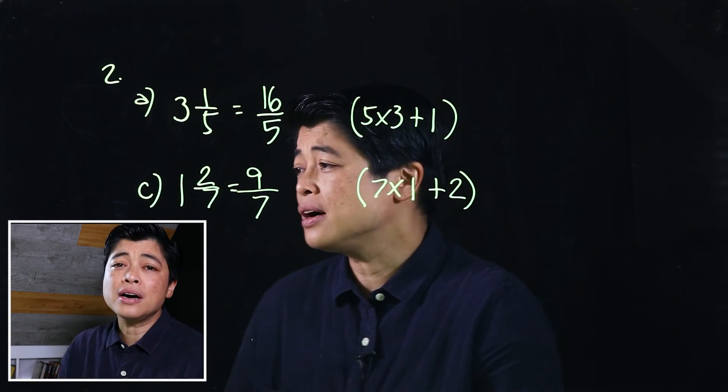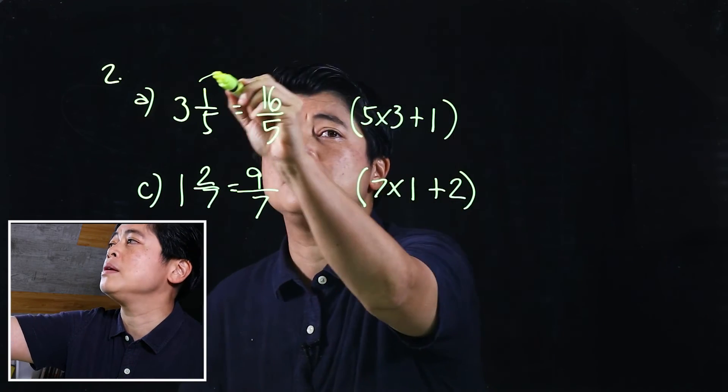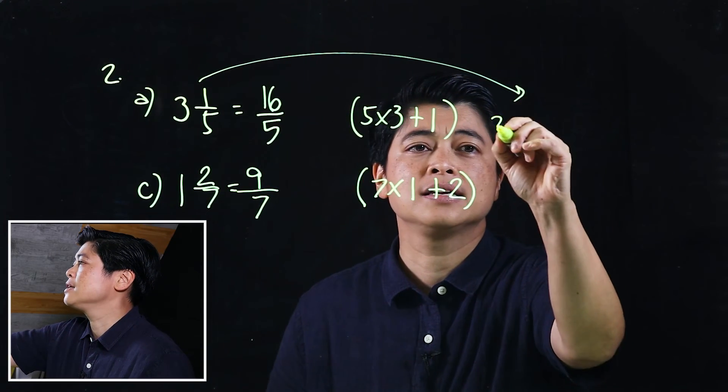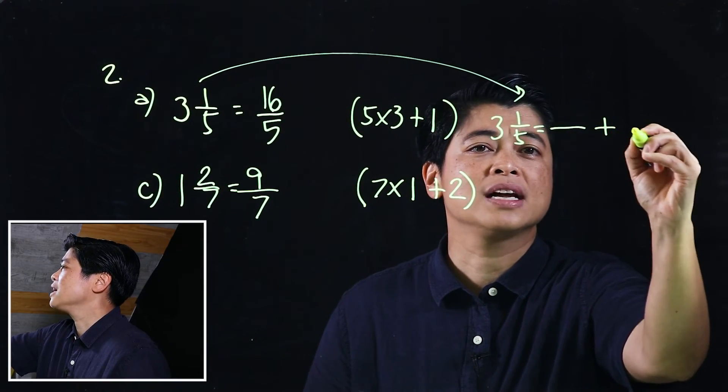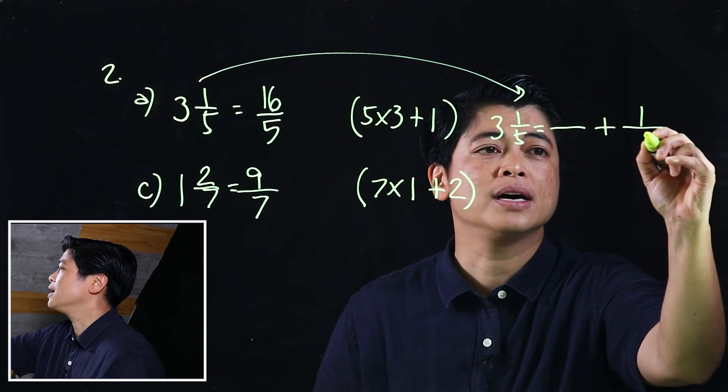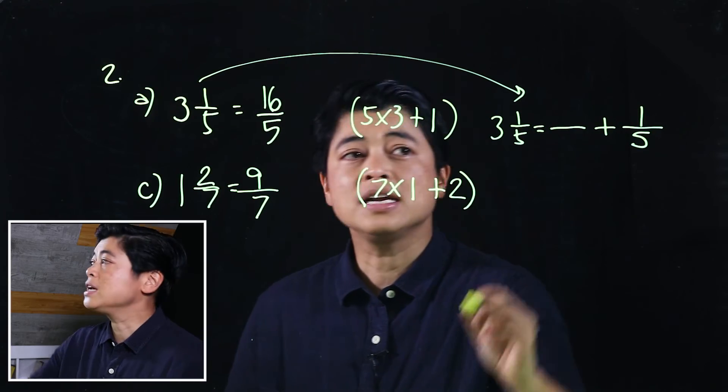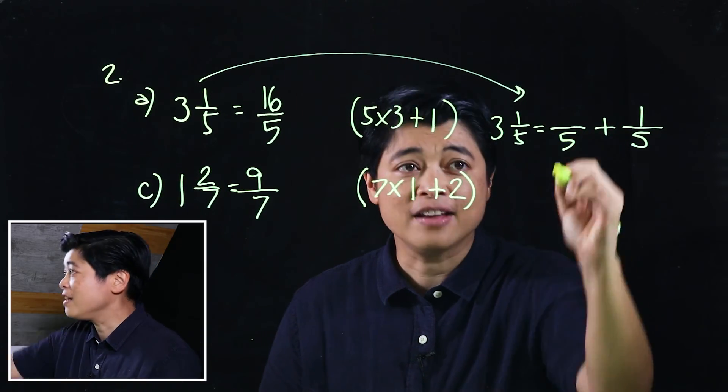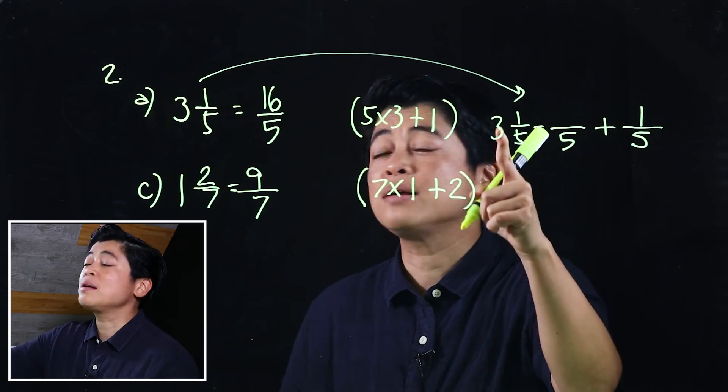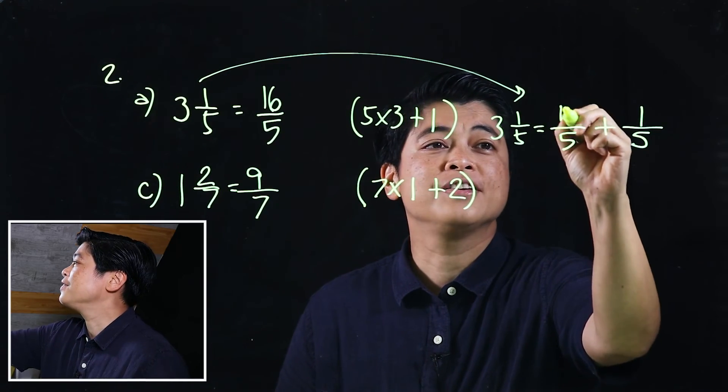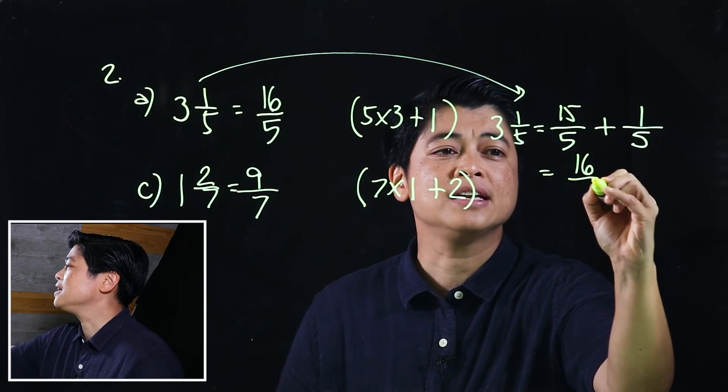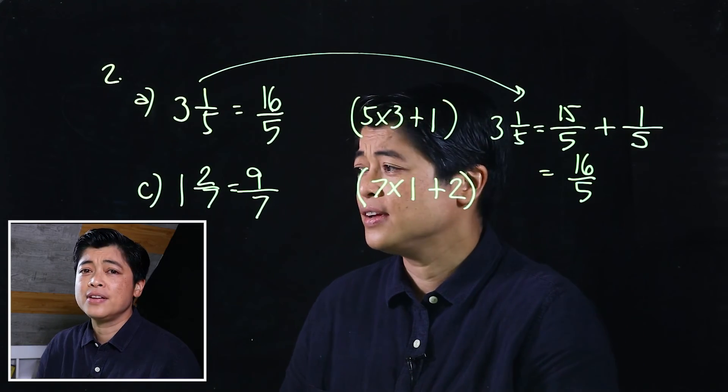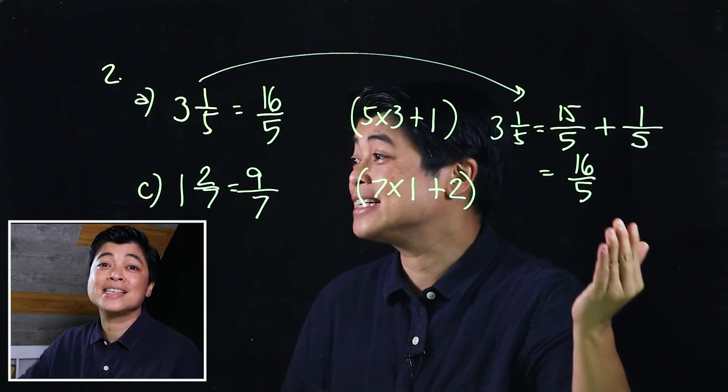Now to show how the book will do it, the book will split it as 3 and 1 fifth, so it'll make it two sets of fractions. This is 1 and this is 5, so it'll make this as 5, which means the 5 times the 3 is 15, and then 15 plus 1 is 16 over 5. So as you can see, it's the same answer, it's just written in more steps.